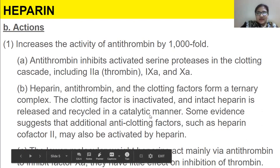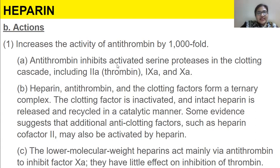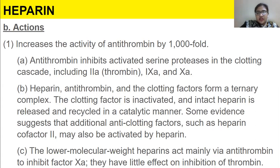Antithrombin inhibits activated serine proteases in the clotting cascade, which includes 2a, 9a, and 10a. Heparin, antithrombin, and the other clotting factors form a ternary complex. The clotting factor is inactivated and intact heparin is released and recycled in a catalytic manner. Some evidence suggests additional anti-clotting factors such as heparin cofactor 2 may also be activated by heparin. Lower molecular weight heparin acts mainly via antithrombin to inhibit factor 10a, with little effect on inhibition of thrombin.